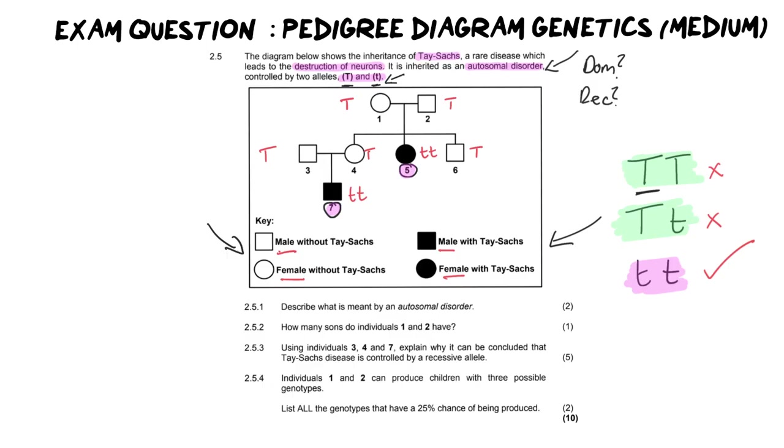In order to work out individual one and two, we are going to look at their children. And the key here is actually number five. Because number five is homozygous recessive, that means that it would have gotten one small T from dad and one small T from mom. And we've now completed who one and two are. But now we need to look at their children. And their children are a little bit more complicated because six, for example, could have inherited a capital T from dad and a capital T from mom because they're present in both one and two. Or it could have inherited a capital T and a lowercase T. And the same can be said for individual four.